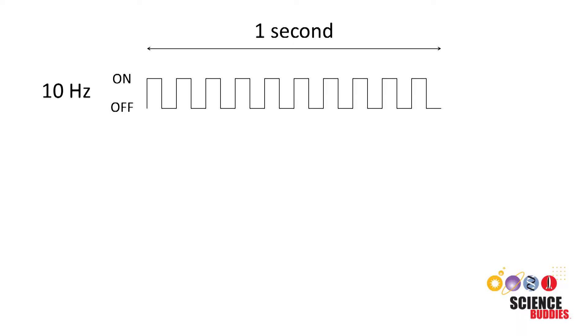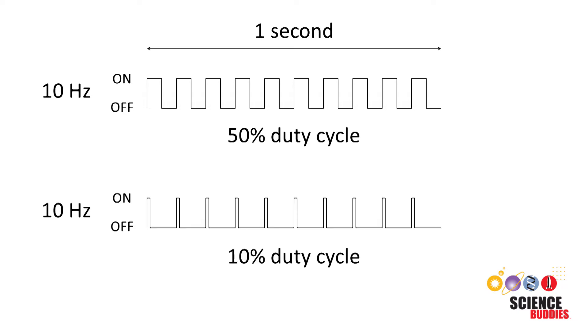For example, a frequency of 10 Hertz means that the strobe flashes 10 times per second. The period, or the amount of time from the beginning of one flash to the beginning of the next flash, is one tenth of a second. If the duty cycle is 50%, that means the strobe is on for half of each period and off for half of each period, or five hundredths of a second each. If we drop the duty cycle down to 10%, then the strobe is only on for 10% and off for 90% of each period. So it's only on for one hundredth of a second and off for nine hundredths of a second.